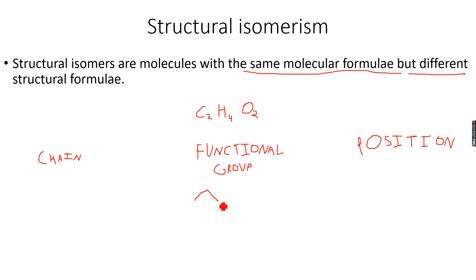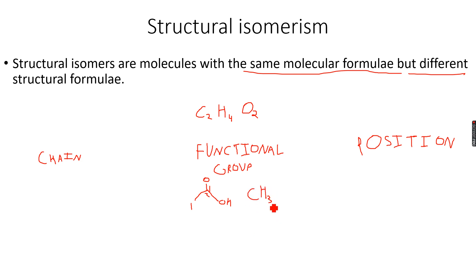We can make a carboxylic acid from C2H4O2. You can see two carbon atoms, and this is a carboxylic acid because of the COOH functional group. This compound is called ethanoic acid.